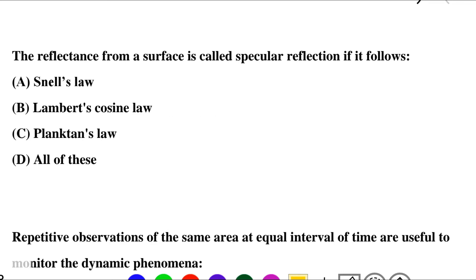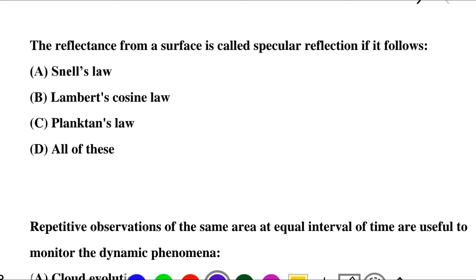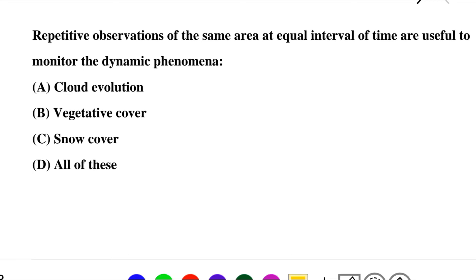Next question: the reflectance from a surface is called specular reflection if it follows — option A: Snell's law, option B: Lambert cosine law, option C: Planck's law, option D: all of the above. So the correct answer is option A: Snell's law.